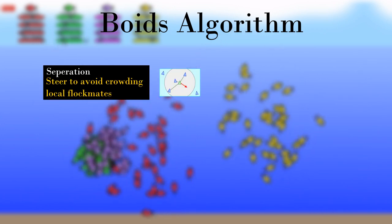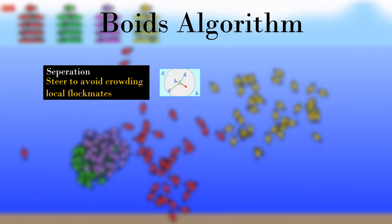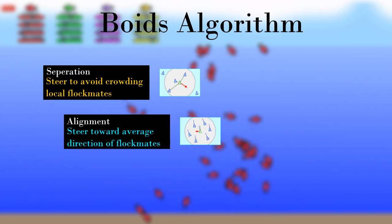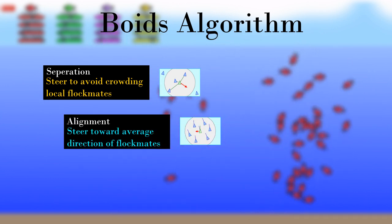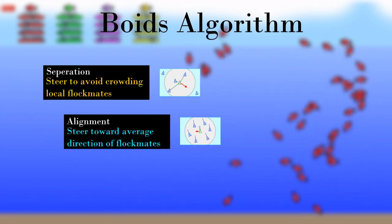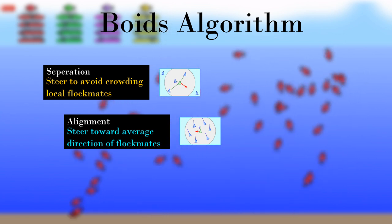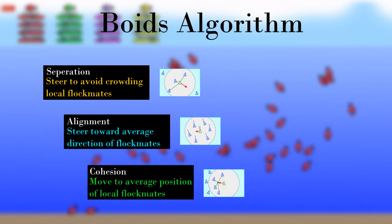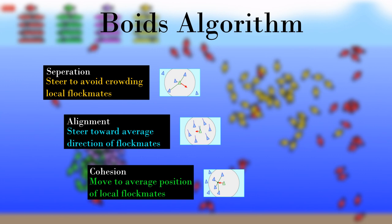Separation moves the fish apart so that they don't get too close to each other. Alignment makes each fish match the velocity and direction of the nearby fish. Cohesion makes them move towards each other.